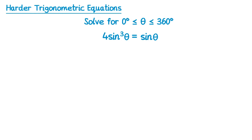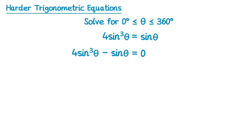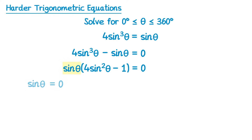For this equation we use the same strategy — get all terms on the left hand side and factorise. We subtract sin theta from both sides, giving 4 sin cubed theta minus sin theta on the left and 0 on the right. We factorise out sin theta, getting sin theta times a bracket equals 0. To get 4 sin cubed theta we multiply sin theta by 4 sin squared theta, and to get negative sin theta we multiply by negative 1. So we have sin theta times 4 sin squared theta minus 1, meaning either sin theta equals 0 or 4 sin squared theta minus 1 equals 0.